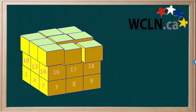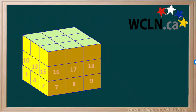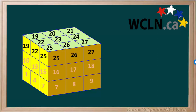Now we'll add 9 more cubes to the top of these 2 layers. This is cube number 19: 20, 21, 22, 23, 24, 25, 26, and 27. You can see that now we've made a large cube consisting of 27 small cubes.